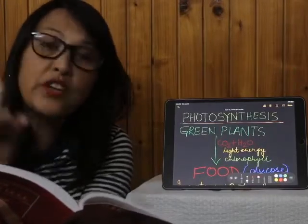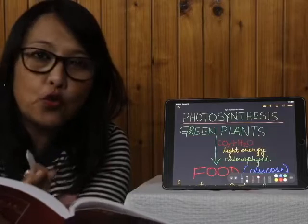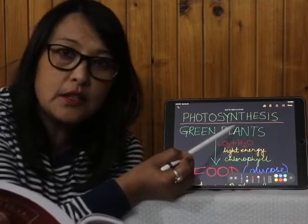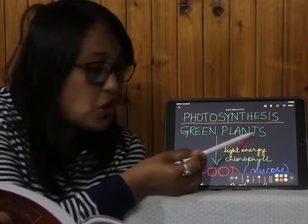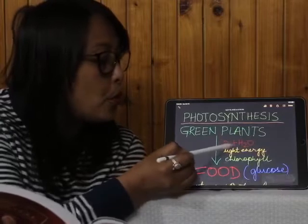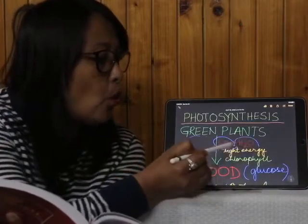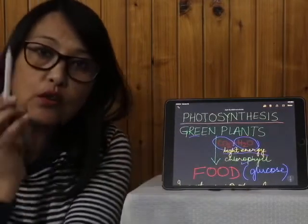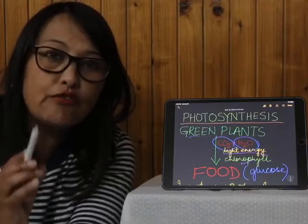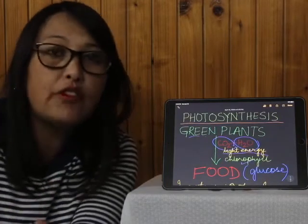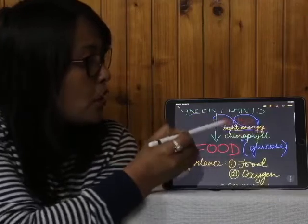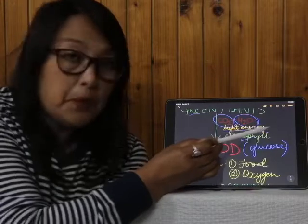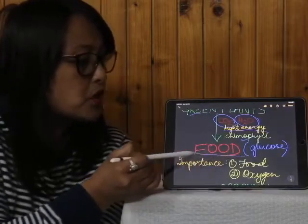Today we are going to start with the photosynthesis chapter. Photosynthesis is the process by which green plants make their own food with the help of carbon dioxide, water, light energy, and chlorophyll. Chlorophyll is the green pigment found in the chloroplast of a plant cell. By using carbon dioxide, water, and chlorophyll in the presence of sunlight, food is produced.